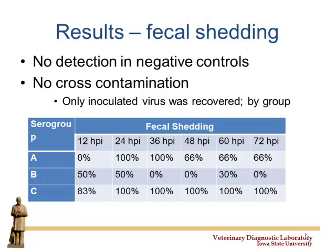Looking at fecal shedding by time point: group A's at 12 hours post-inoculation had no pigs shedding. B's had 50% and C's had 83% shedding at 12 hours. By 24 hours the picture changed. Basically, A took a little longer to get going; B's were there early but then not very hardy; C's started quick and kept going — they lasted a long time. Potentially while we're seeing more C's, these C viruses may have genetic information that gives them a longer duration of disease.